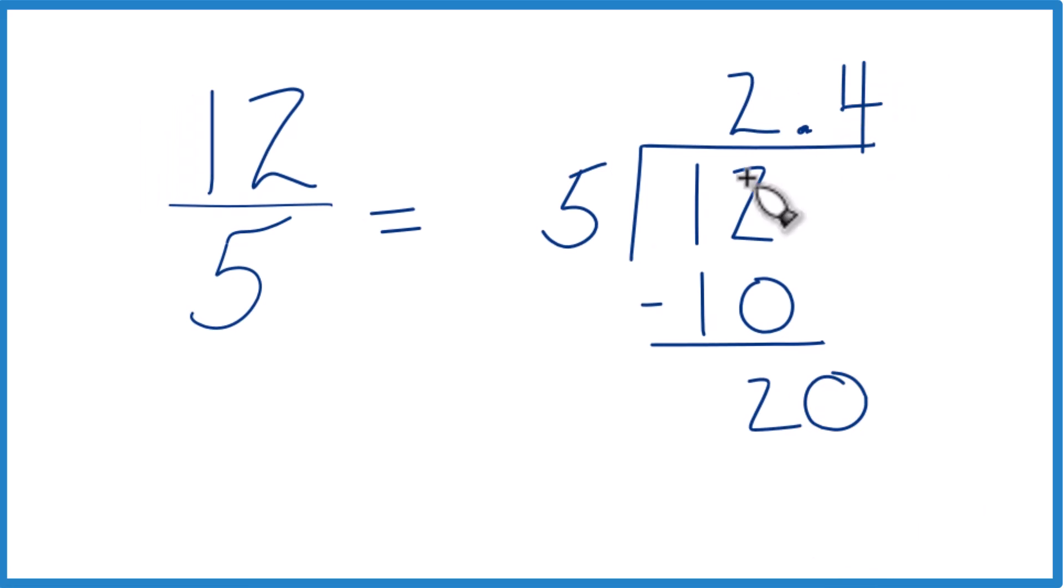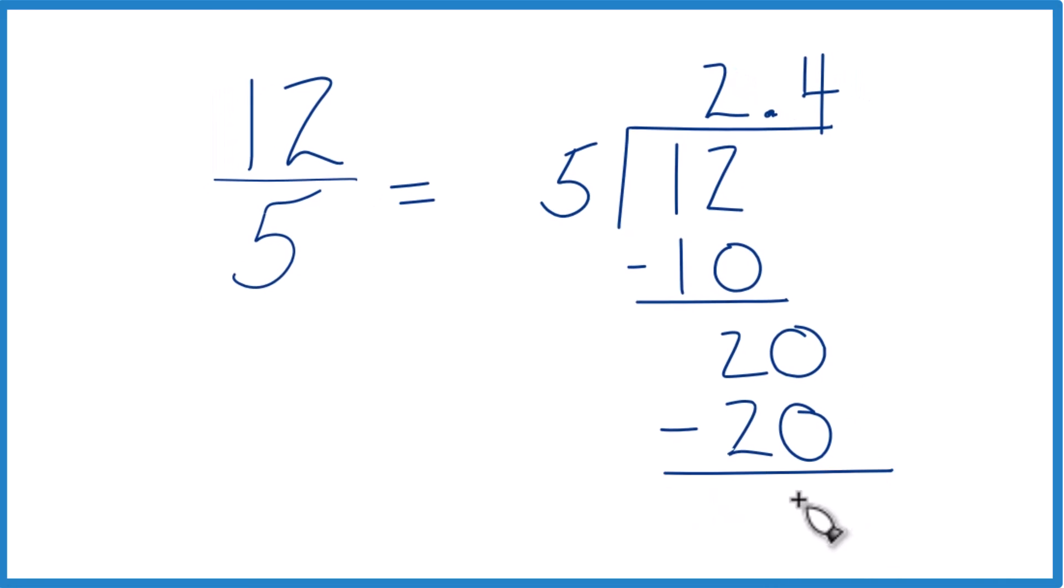So now 4 times 5, that gives us 20, and when we subtract, no remainder.